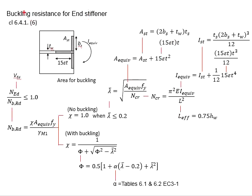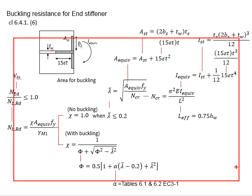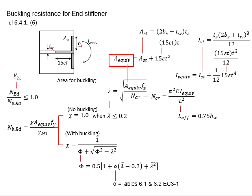To check for the buckling resistance of the end stiffener, the same stack of calculations apply. Only that the A-equivalent now is referring to this and this, while the I-equivalent is actually referring to this part and this part and this part rotating in this direction. The main difference is there is no additional web sections here.